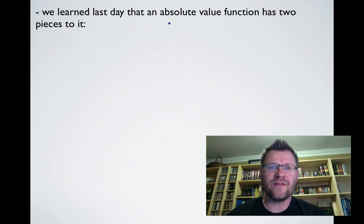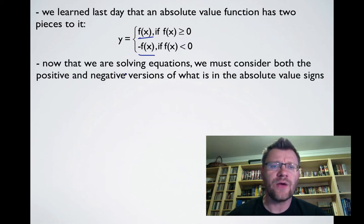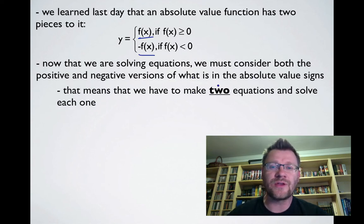We learned last day that an absolute value function has two pieces to it: a positive part f(x) if f(x) ≥ 0, and a negative part -f(x) if f(x) < 0. Now that we're solving equations, we must consider both positive and negative versions of what is in the absolute value signs. That means we have to make two equations and solve each one.